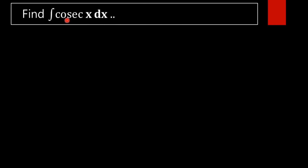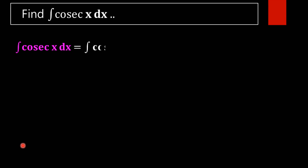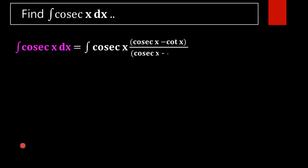We have to find the value of the integral of cosec(x) dx. In order to find this value, we are going to use a simple trick — we are multiplying and dividing cosec(x) by (cosec(x) minus cot(x)).